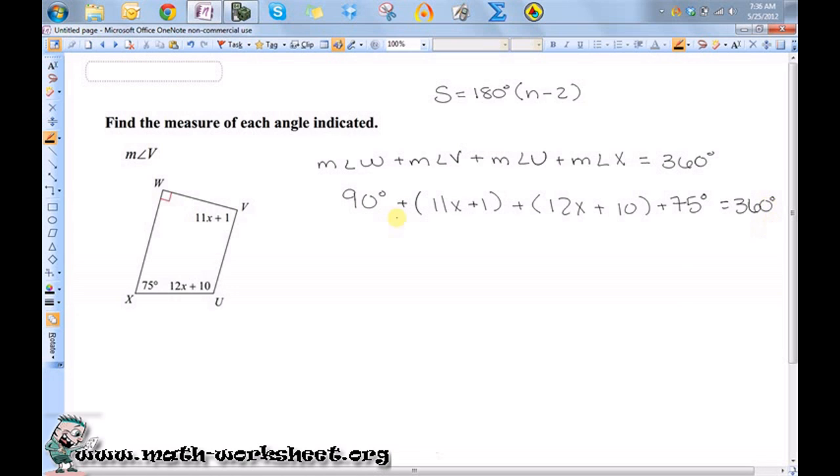So let's combine our like terms. So 90 plus 1 plus 10 plus 75 should equal 176. And 11X plus 12X should equal 23X plus 176 equals 360 degrees.